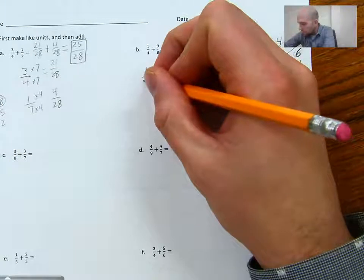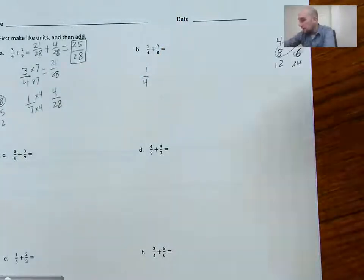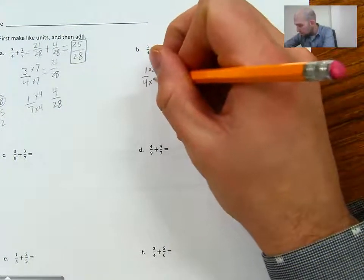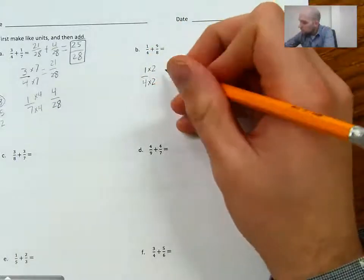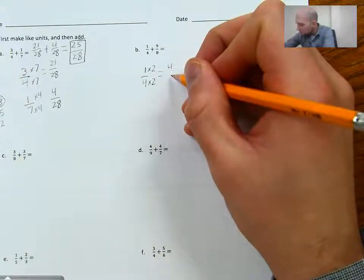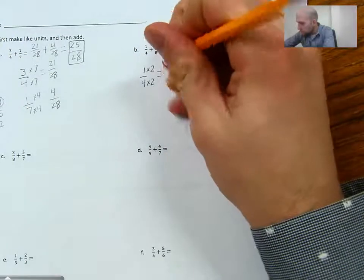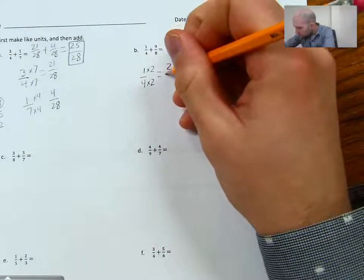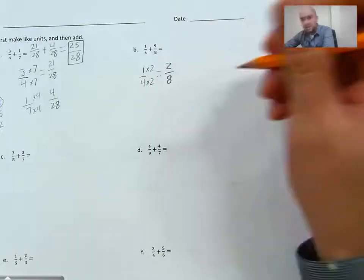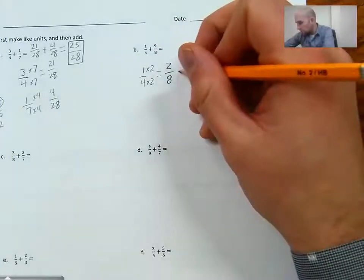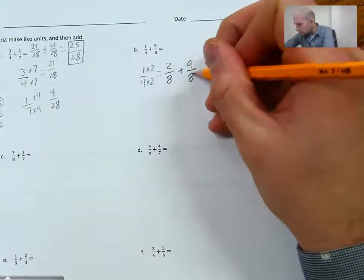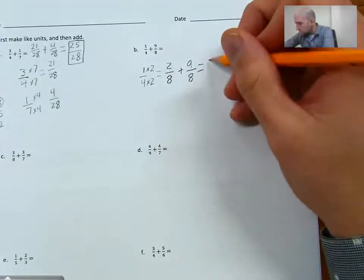To make 1/4 into 8ths, I'd have to cut them in half, or I'd have to multiply by 2 on both my numerator and my denominator. What I'm going to end up with is 2/8. And then 9/8, I can just leave that alone, because I'm adding. I already have 8ths, so I have 2/8 plus 9/8, which is 11/8.